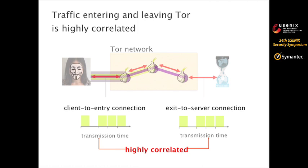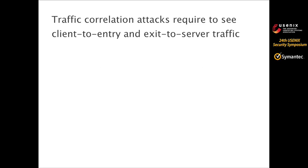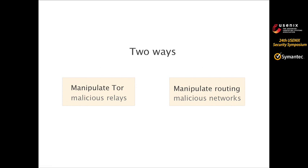Even though no Tor entity can directly know both the source and the destination, the traffic entering and leaving Tor is actually highly correlated. By correlating such client-entry and exit-to-server traffic flows, one can effectively de-anonymize Tor users. In order to perform such traffic correlation attacks, adversaries need to see both client-entry and exit-to-server traffic. The question is: how can adversaries do that?